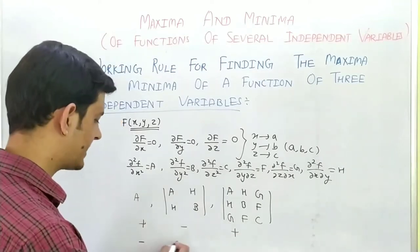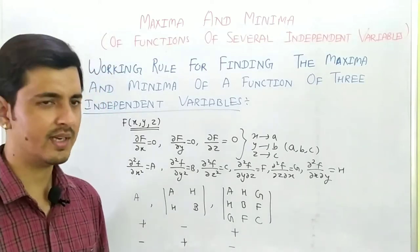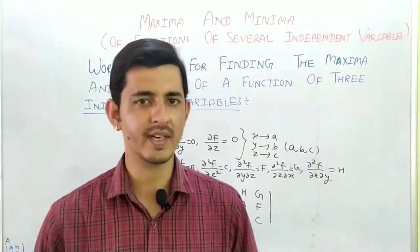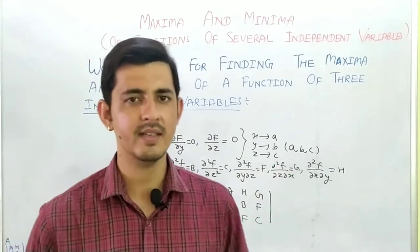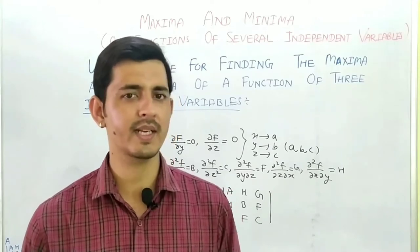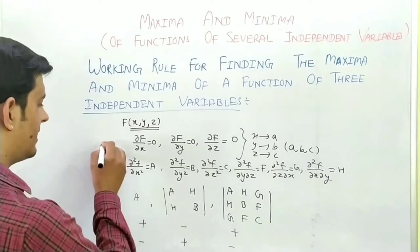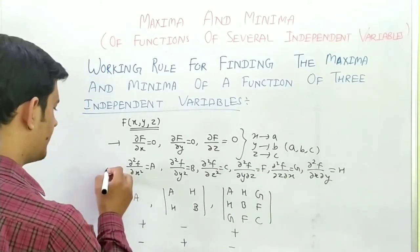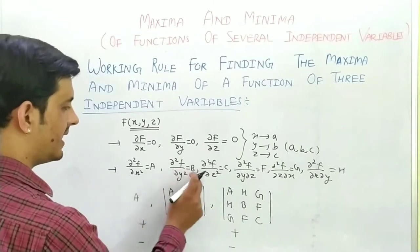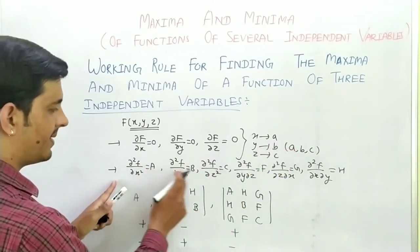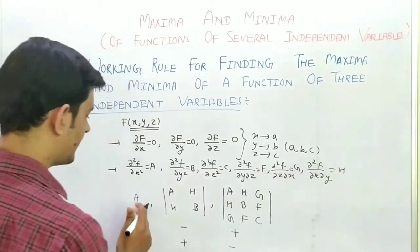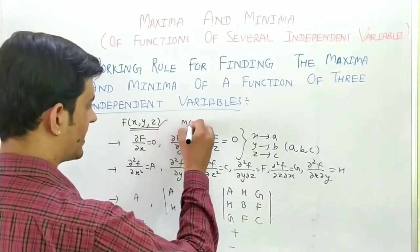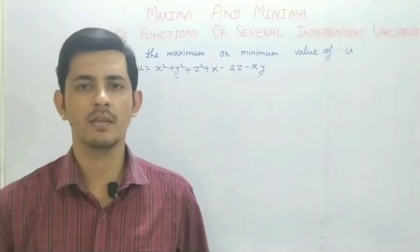If the sign is alternately changing — minus, plus, minus — then also it is an alternating sign change. So if such a condition arises, then the given function has a maximum at point (a, b, c). And for minimum, the condition is: all three determinant values positive. In 3-variable cases, the main three steps are: differentiate with respect to all three variables, set equal to 0, find x, y, z values (the stationary point).